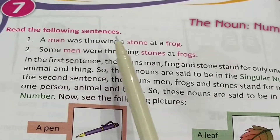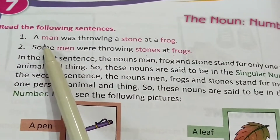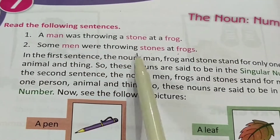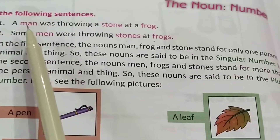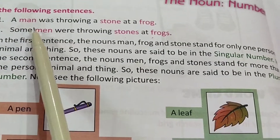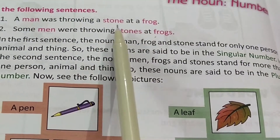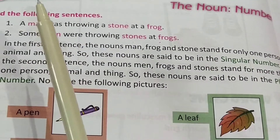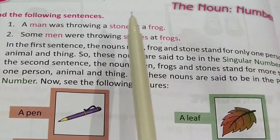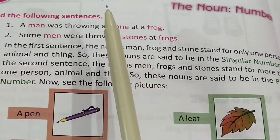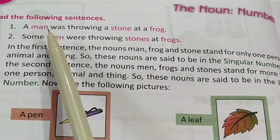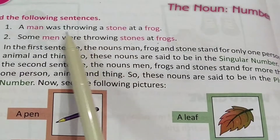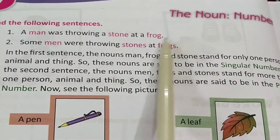Just read these sentences: 'A man was throwing a stone at a frog.' 'Some men were throwing stones at frogs.' In the first sentence, man, frog, and stone stand for only one person, one animal, and one thing. So these nouns are said to be singular number, because these all are one.